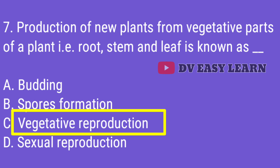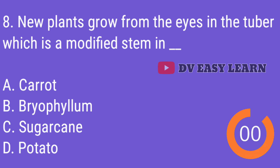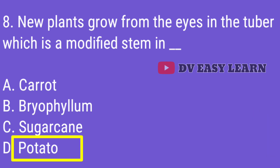Correct answer: Vegetative reproduction. Q8. New plants grow from the eyes in the tuber, which is a modified stem, in? Correct answer: Potato.